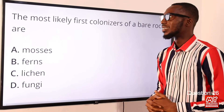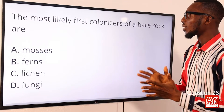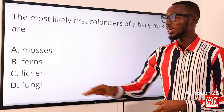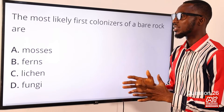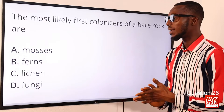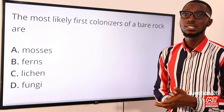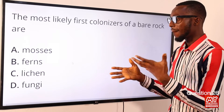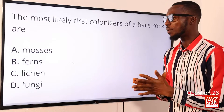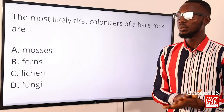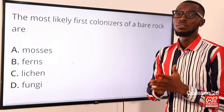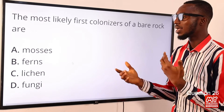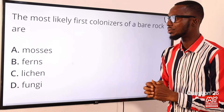Question 26. The most likely first colonizers of a bare rock are lichens. You can find lichens on rock surfaces and tree bark. Lichens are made up of a relationship or association between algae and fungi. The fungus provides shelter while the algae photosynthesizes and provides food.